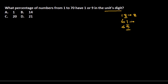To find what percentage of numbers from 1 to 70 have 1 or 9 in the unit's position, first you need to find how many numbers have this property, then calculate the percentage.